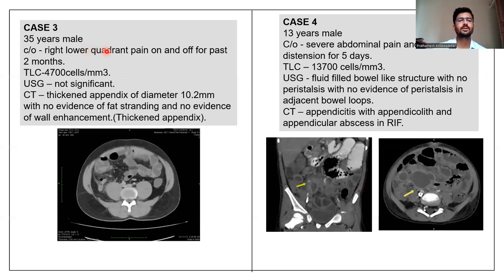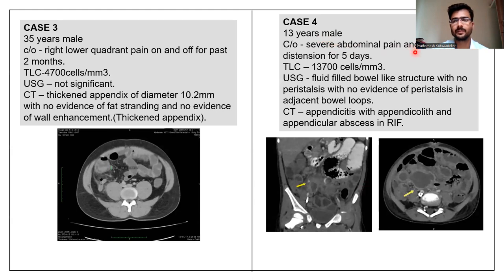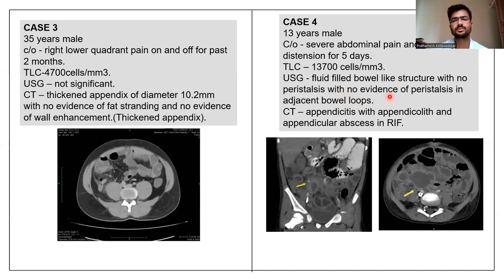The third case was a 35-year-old male with right lower quadrant pain on and off for the past 2 months. TLC count was 4,700 and USG was not significant. CT showed a thickened appendix of diameter 10.2 mm with no evidence of fat stranding and no evidence of wall enhancement. Case 4 was a 13-year-old male with severe abdominal pain and distension for 5 days, TLC count 13,700 increased. Fluid-filled bowel-like structures with no peristalsis in adjacent bowel loops were seen on USG. On CT, appendicitis with appendicolith and an appendicular abscess was found in the right iliac fossa.